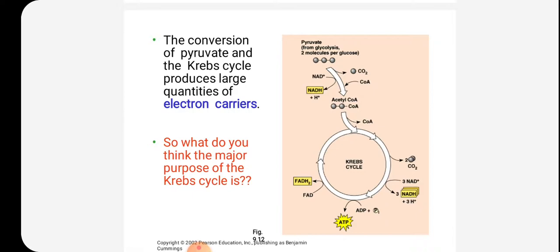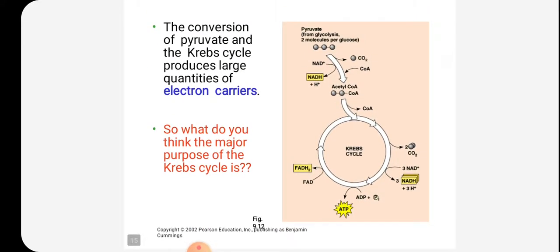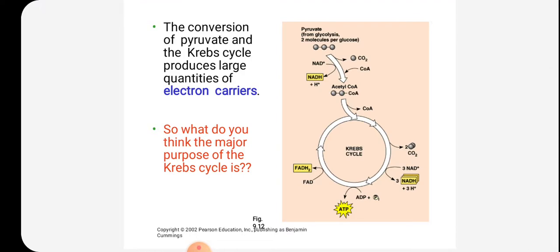The conversion of pyruvate and the Krebs cycle produces large quantities of electron carriers — FADH2 and NADH. The major purpose of the Krebs cycle is to produce ATP as well as electron carriers. From glycolysis, two pyruvate molecules enter; CoA attaches to form acetyl-CoA, which enters the Krebs cycle. Through eight steps, we ultimately get three molecules of NADH, one molecule of FADH2, and one ATP per turn.